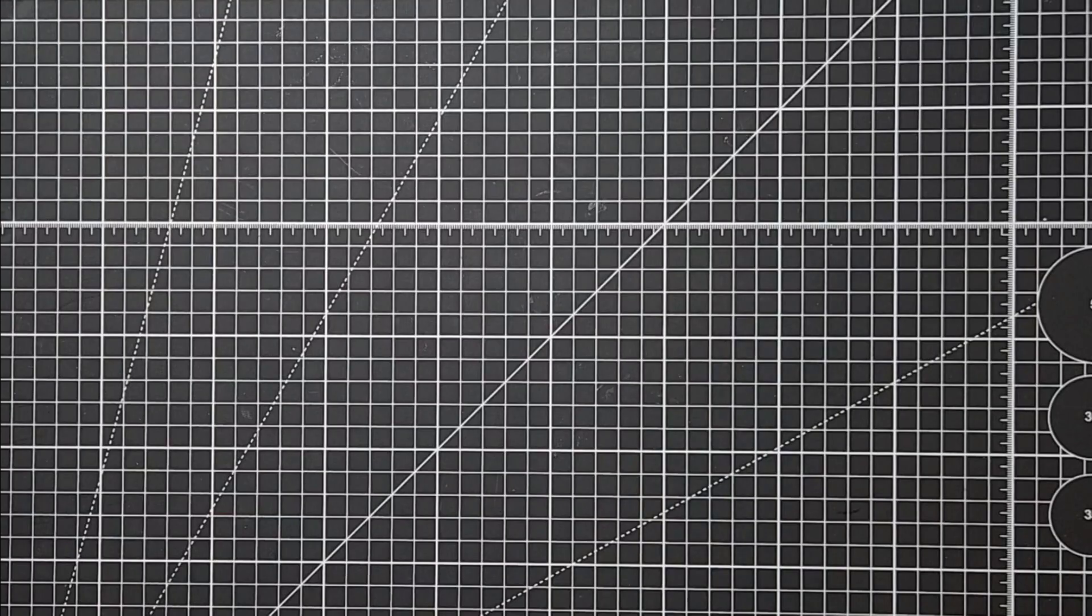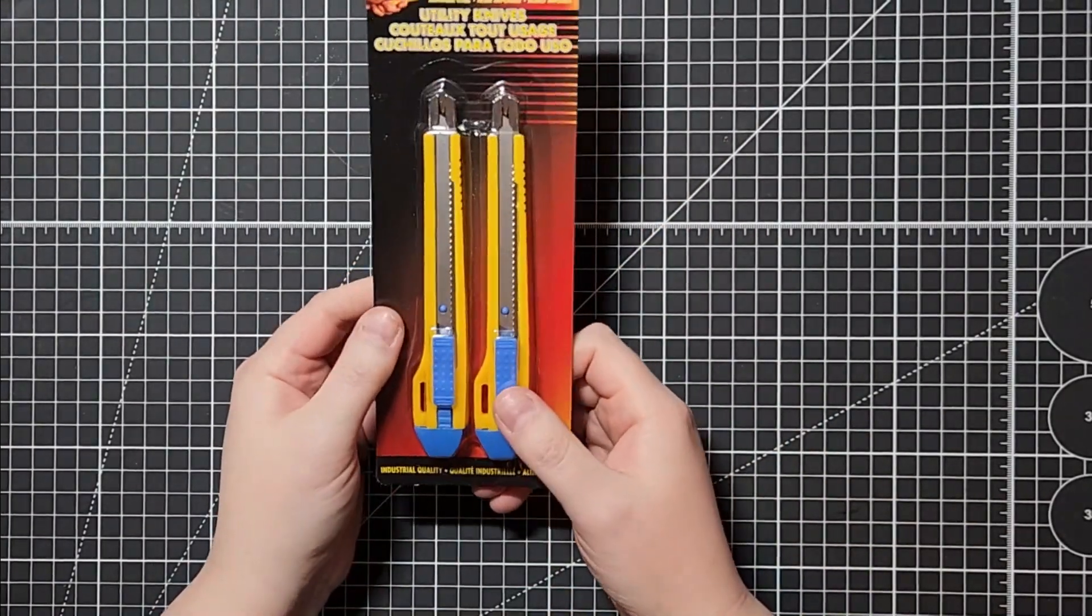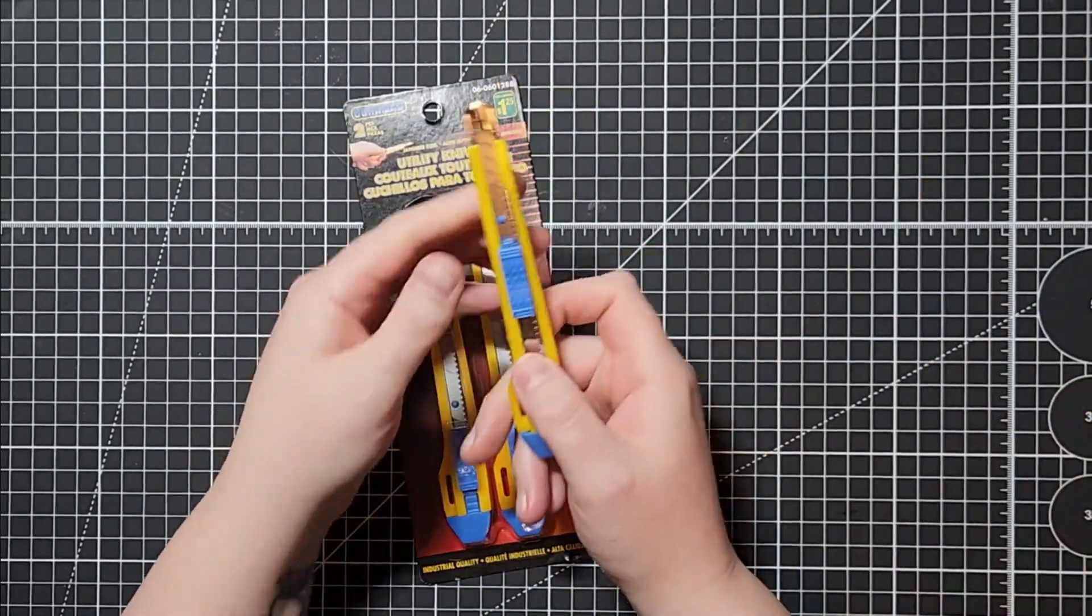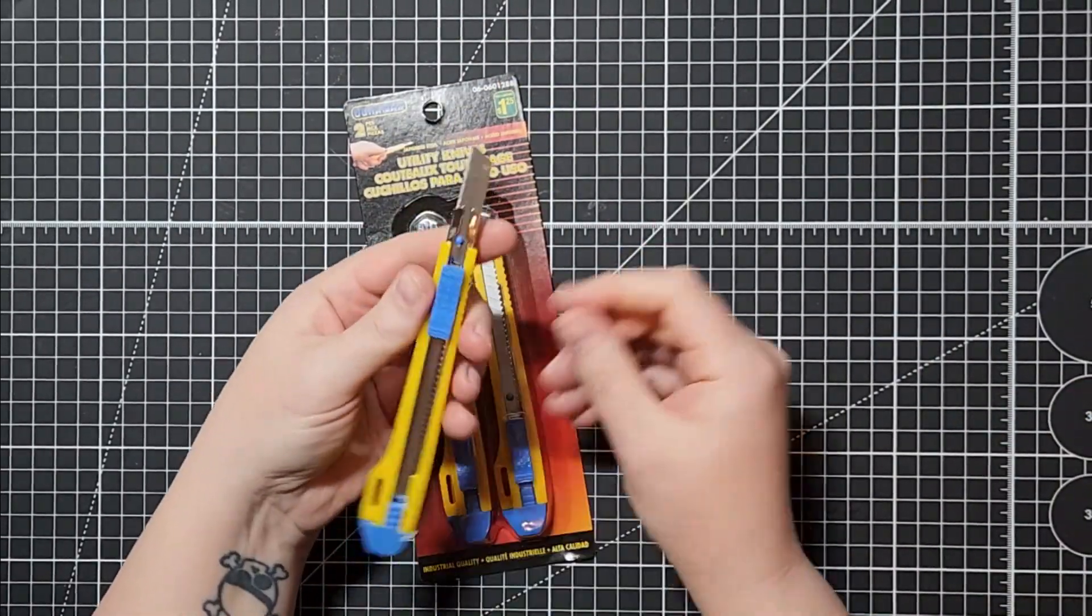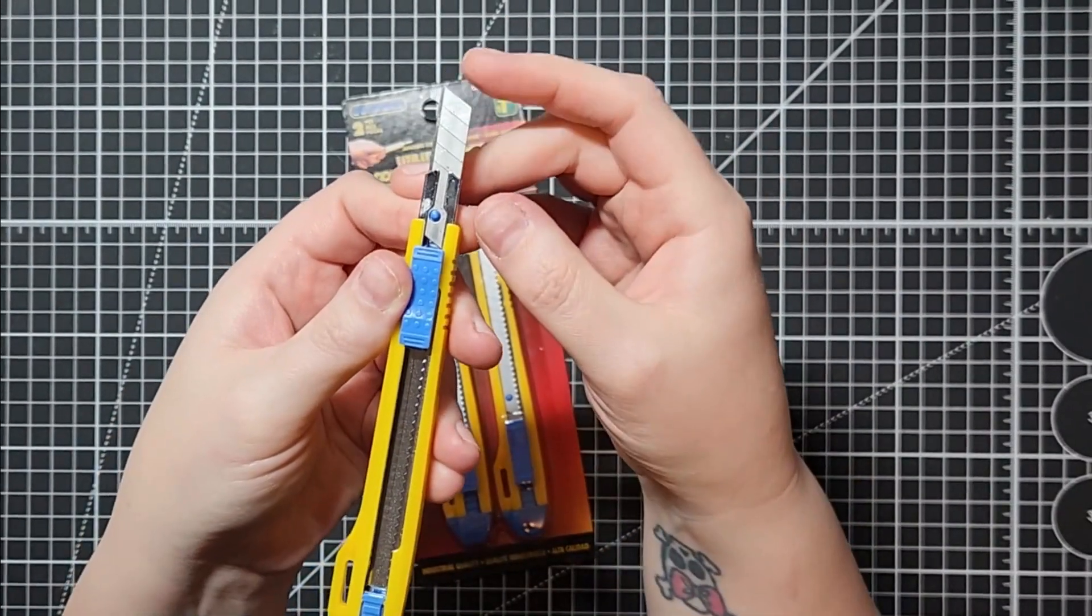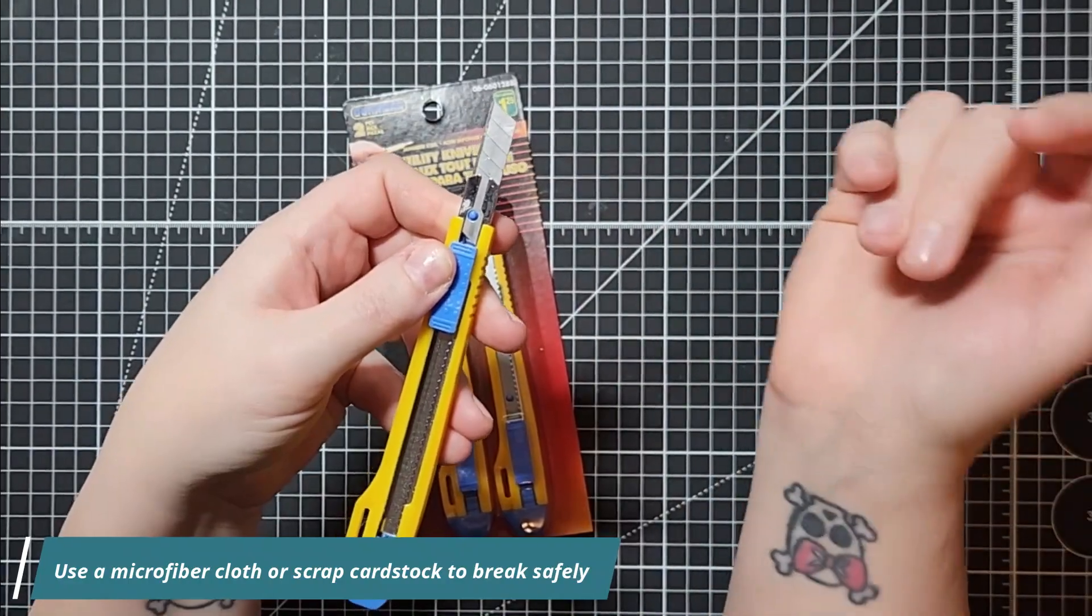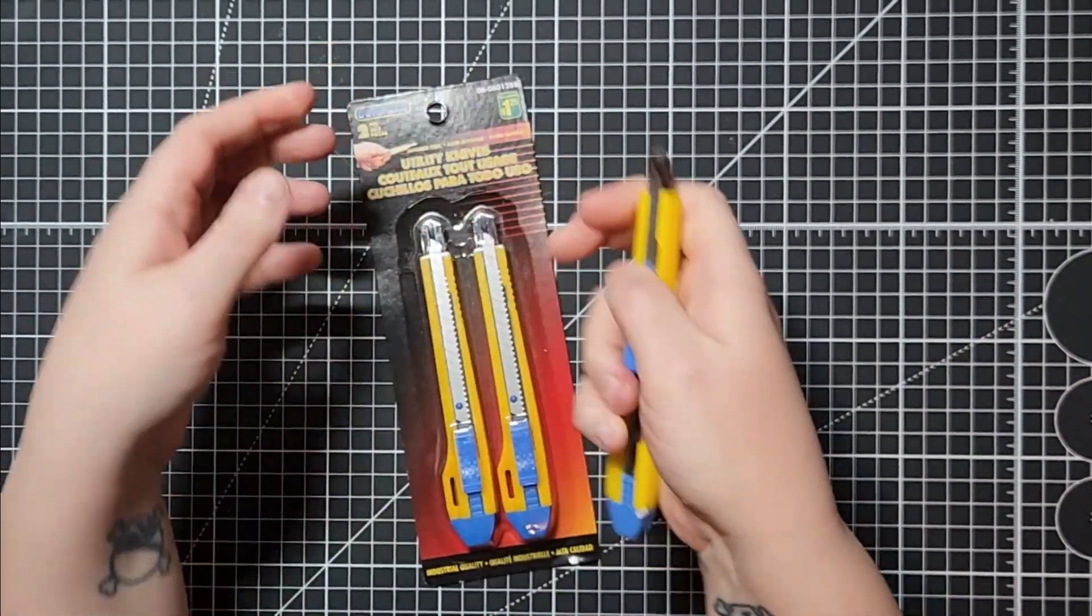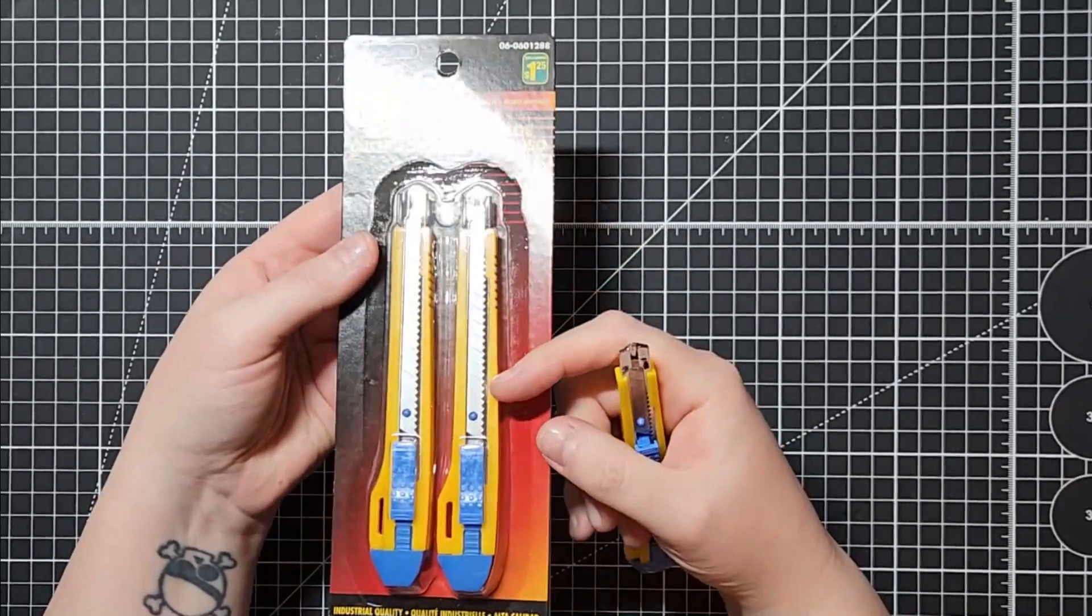Next we're going to go to the hardware section because these utility knives are great for craft knives. I use these all the time, they're retractable. They have these separate sections in them so if it gets too dull or too gummed up, you just break a section off and then the next section is sharp and ready to go.